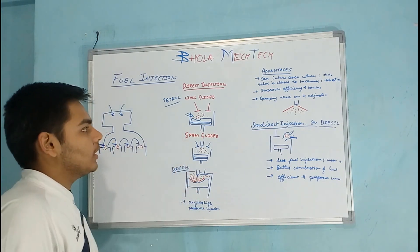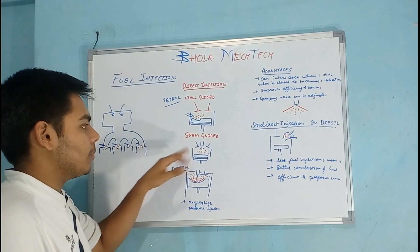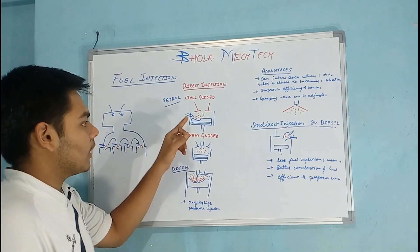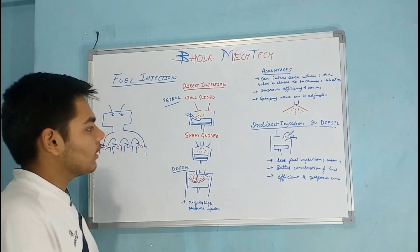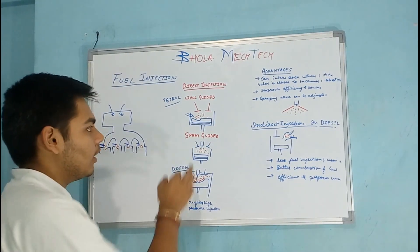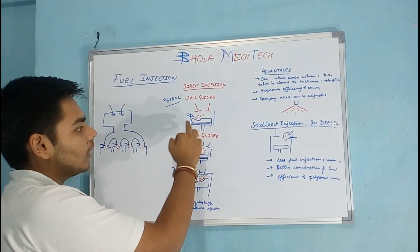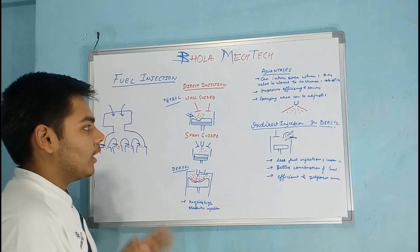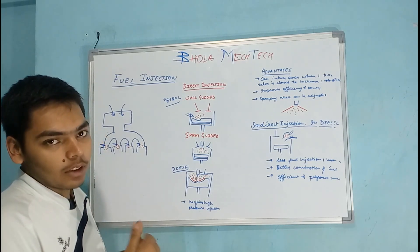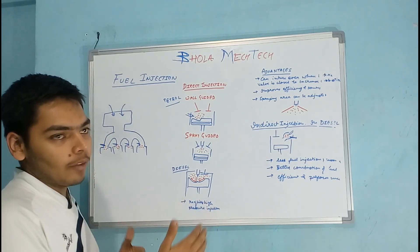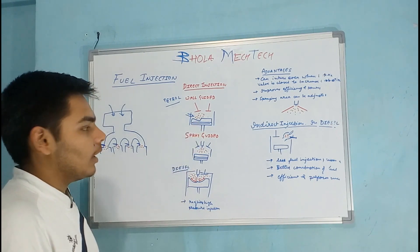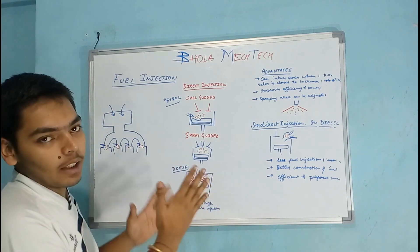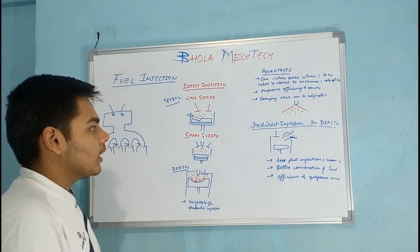In petrol engines you may see wall guided and spray guided — two types of direct injection system. In the wall guided type, the injector is placed inside the cylinder and the piston is shaped such that it gives a path to the fuel entering the cylinder, so that it spreads and mixes throughout the complete cylinder.